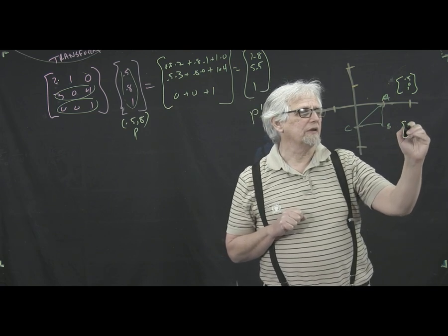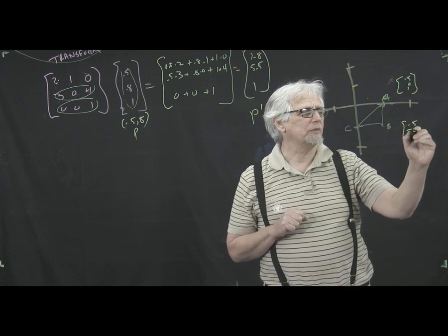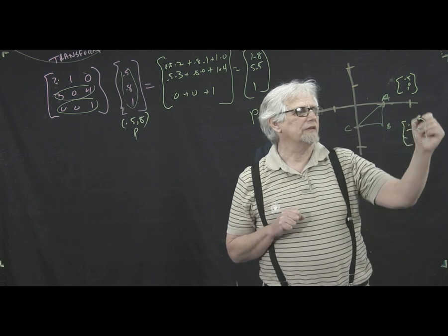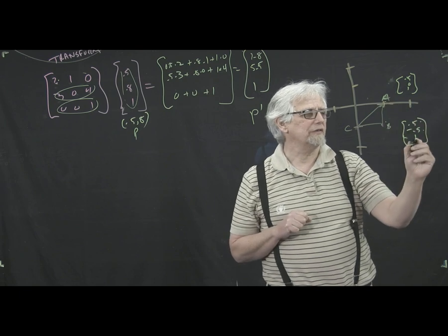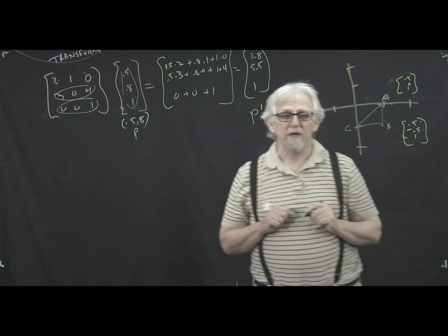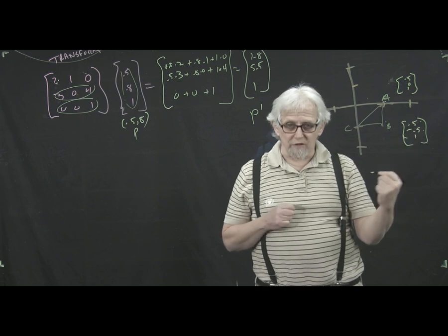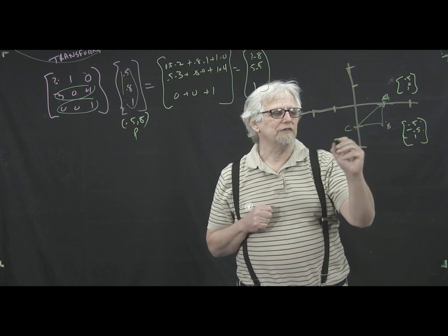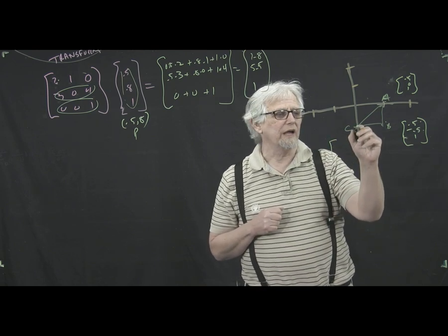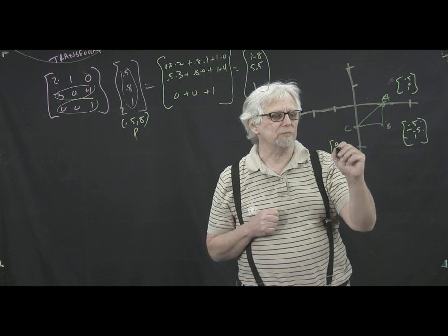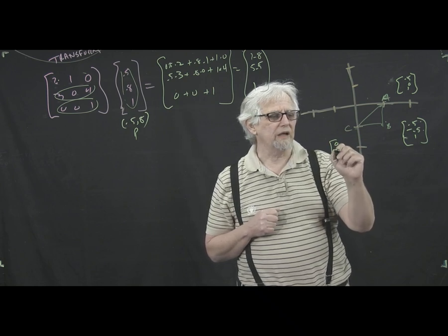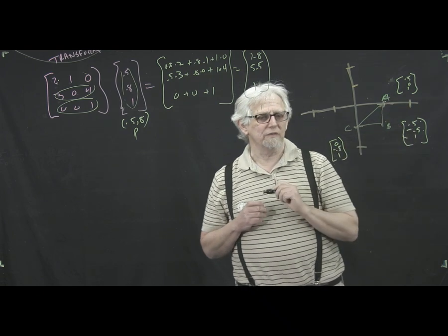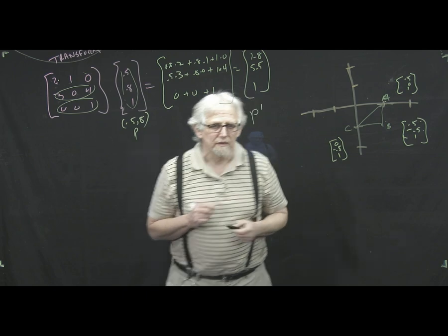B is what? It's 0.5, minus 0.5, comma 1. That's x, y, and there's no z there. And if you're doing this in three dimensions, it's x, y, z, and 1, and we have 4 rows. And then C is what? C is going to be x is 0, y is minus 0.5, and 1. So that's A, B, and C, right?